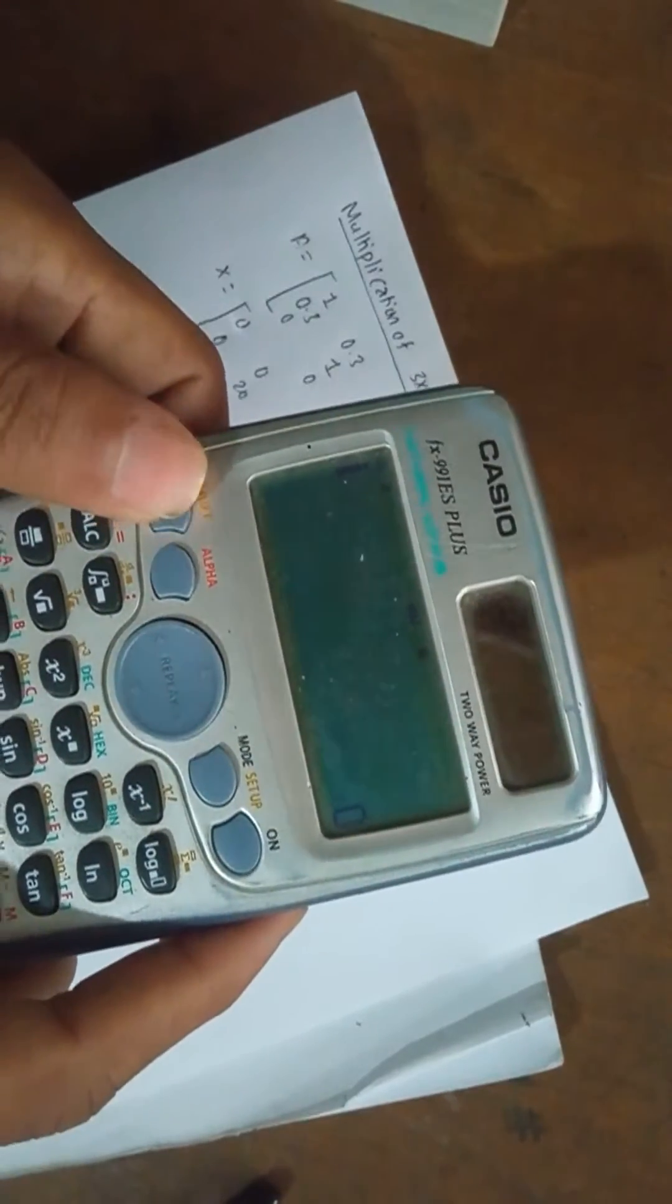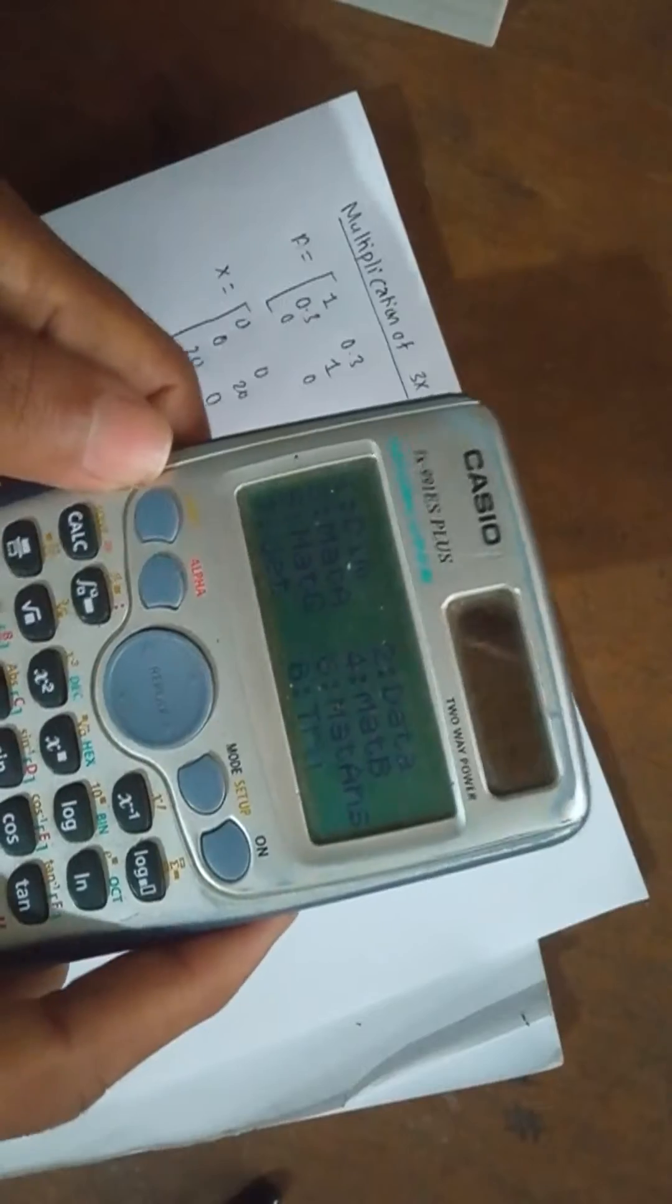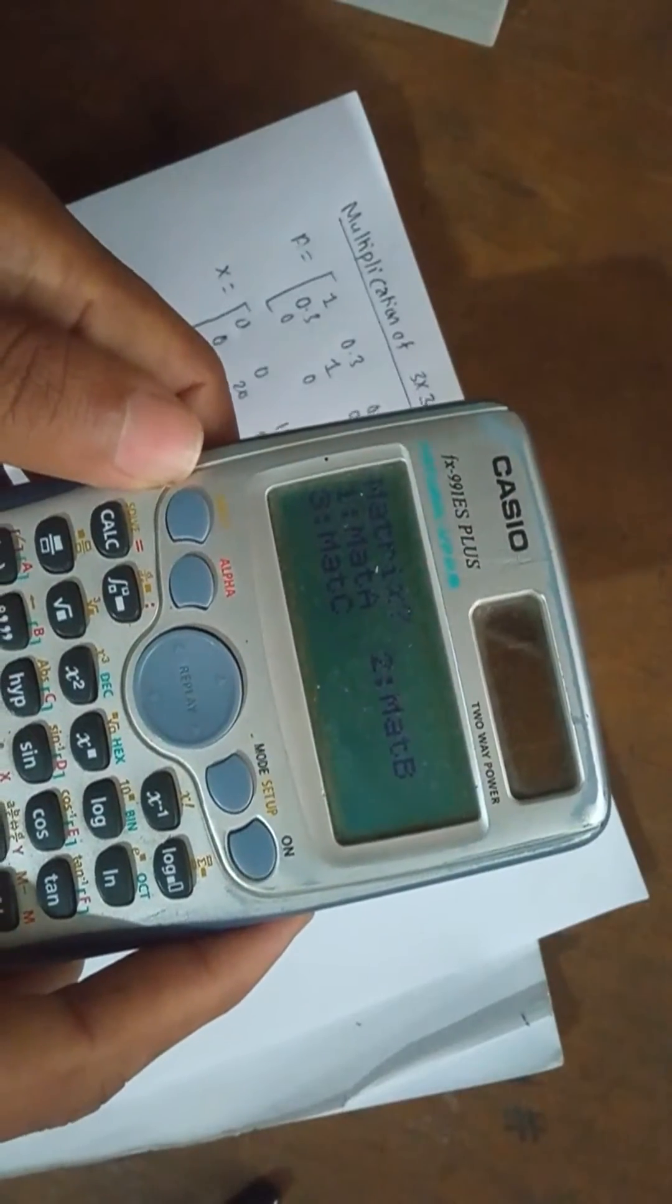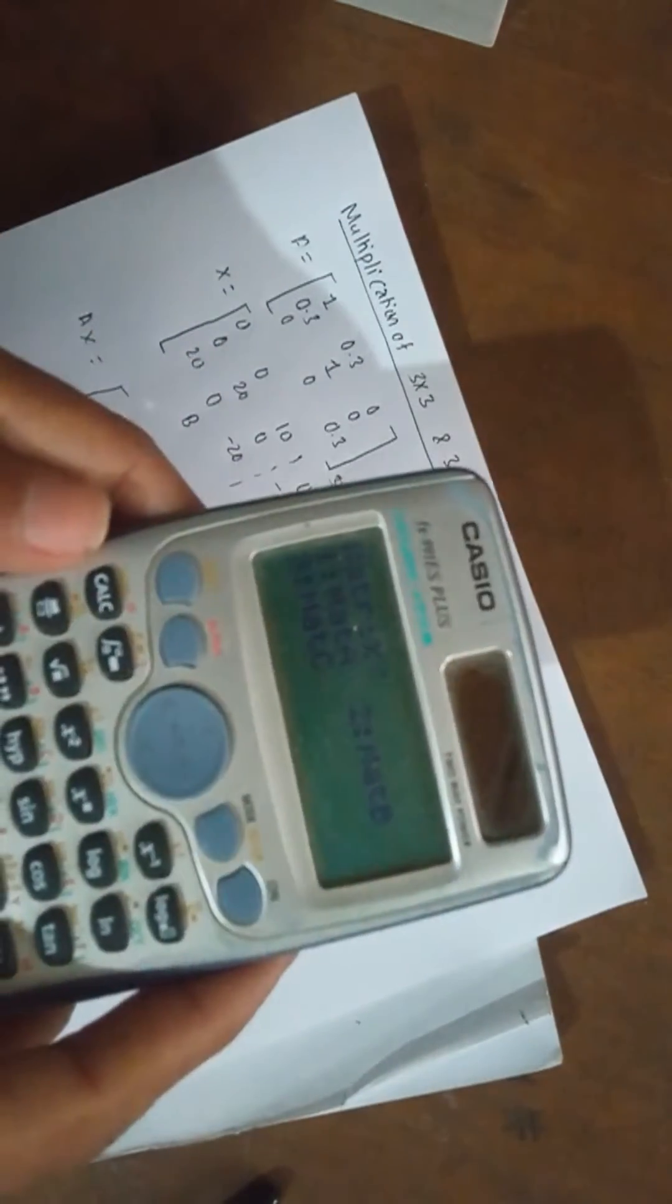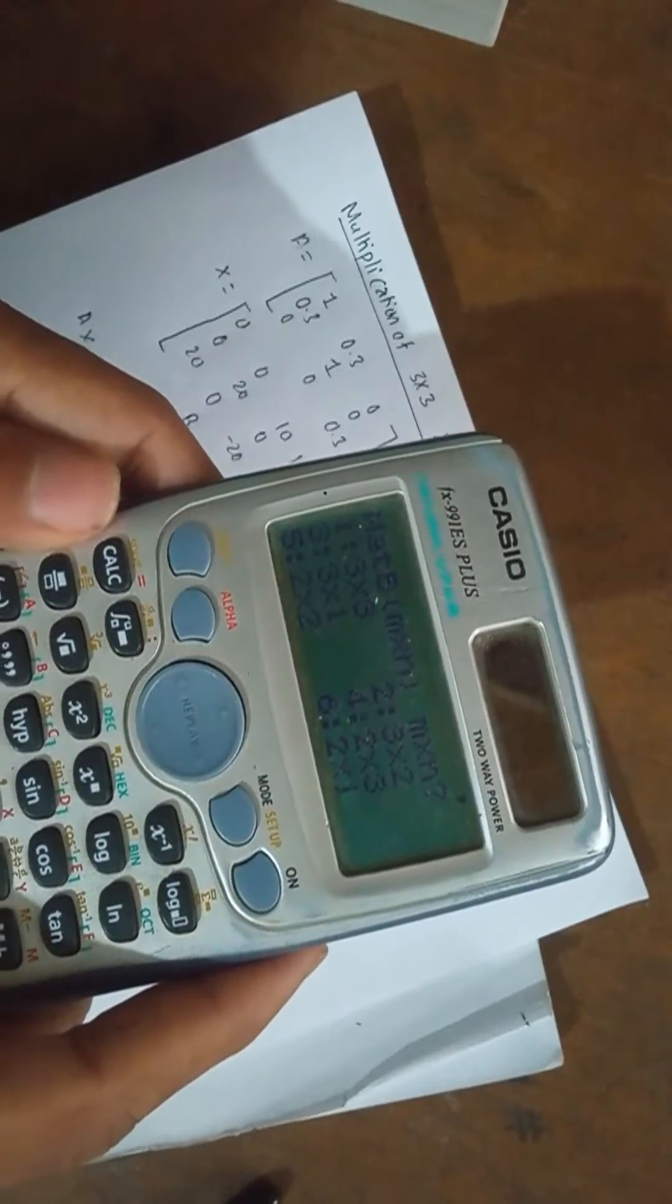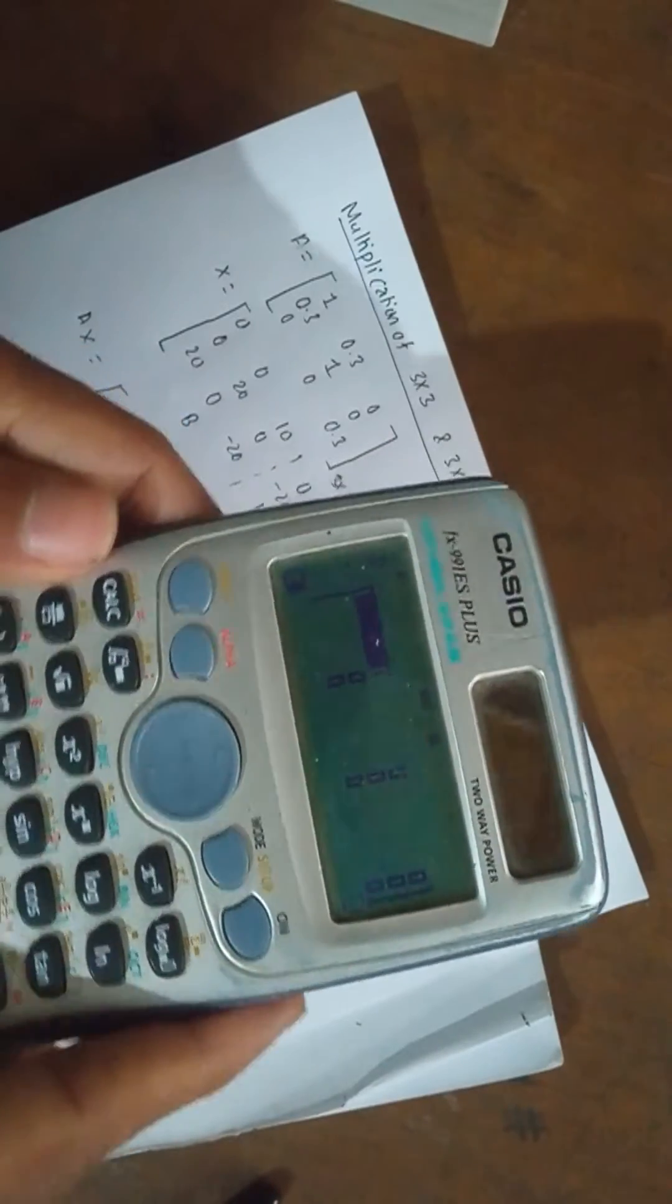Now for another, press shift 4 to enter data for matrix B2. So press 2, then press 1, 0, 0, 10, 0, 20, 0, 20, 0, minus 20.